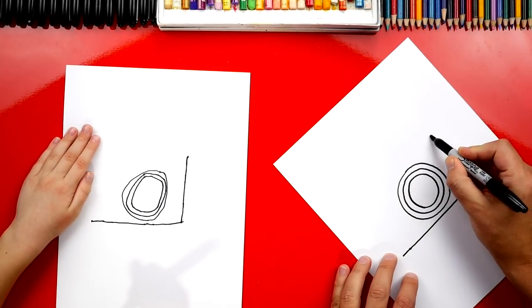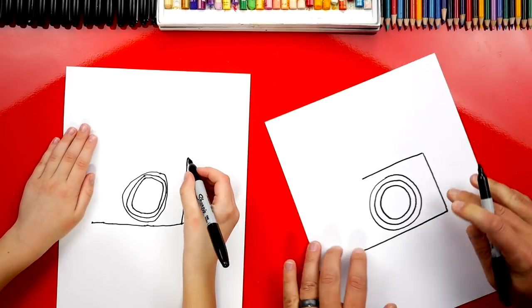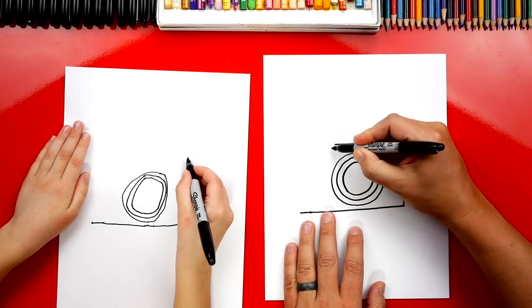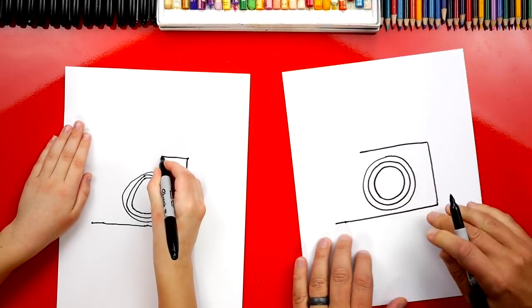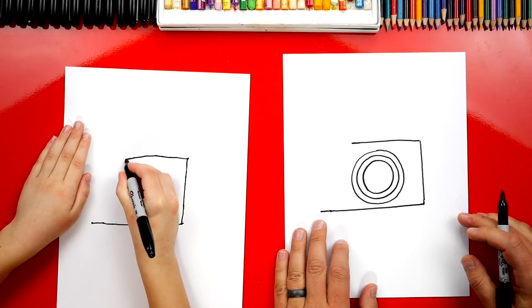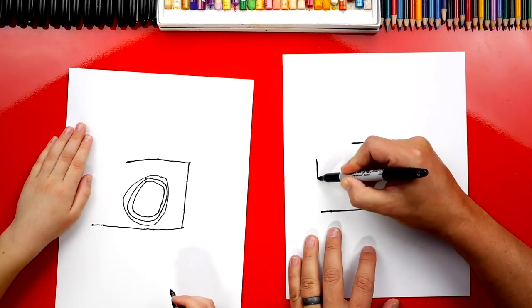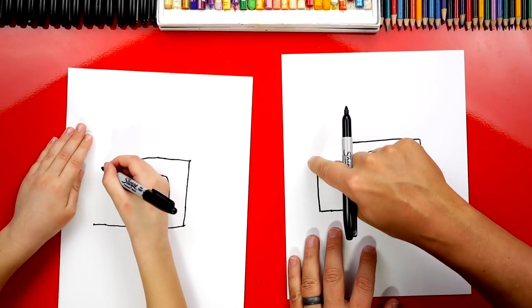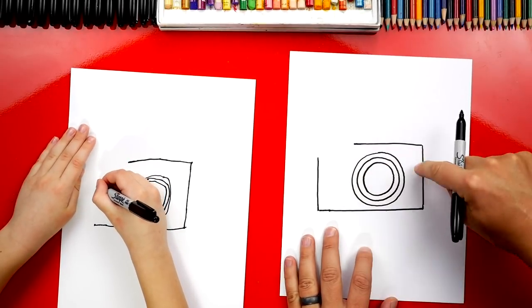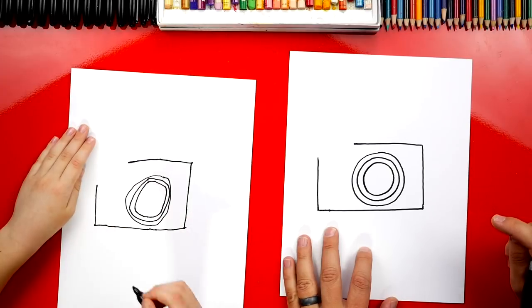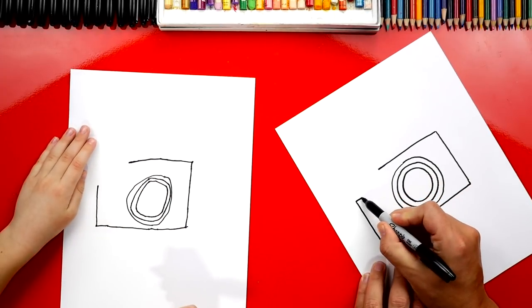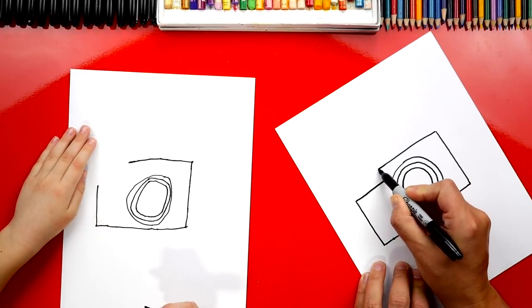Now we're going to draw the top of our camera. We're going to draw a line that comes straight across. I'm going to end right in line with the circles. Now let's draw a line that comes up, and it's not as high as the line on the right side. Now let's draw a line that comes across and up to connect.